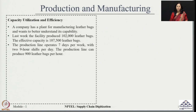Some more data was captured: the production line was able to operate for 7 days per week, with 2 nine-hour shifts per day. The production line has the capacity of making around 900 leather bags per hour. We can see that from this simple example we have captured many data points, and now it is very important to use these data points to decide about some of the KPIs and keep track of them.